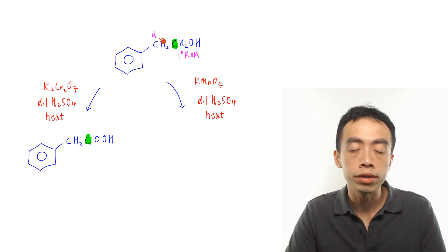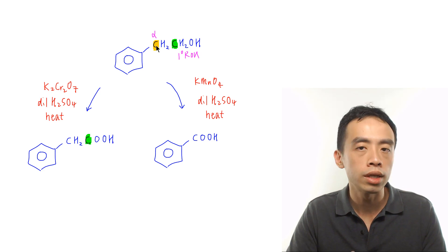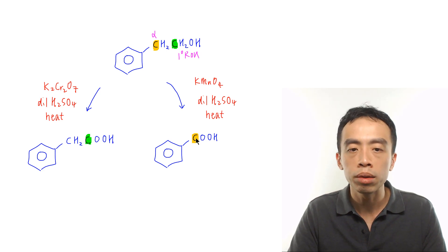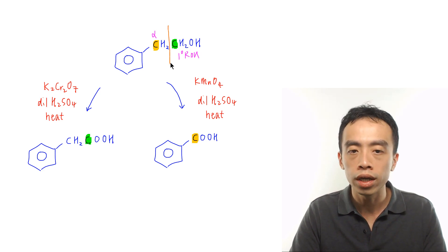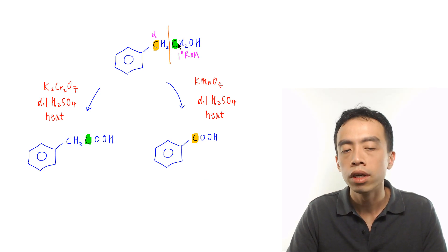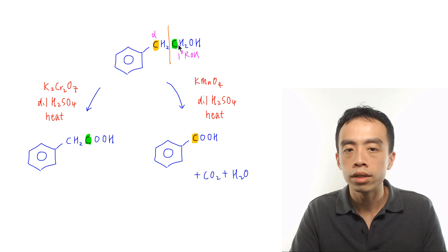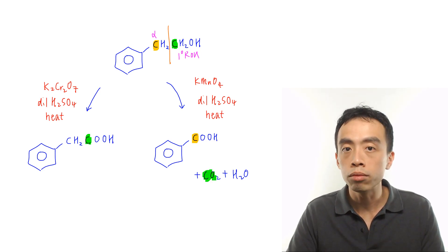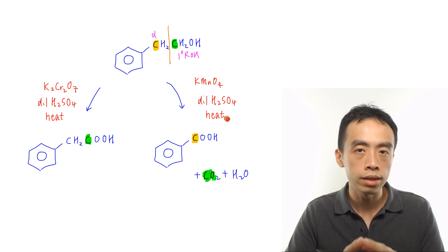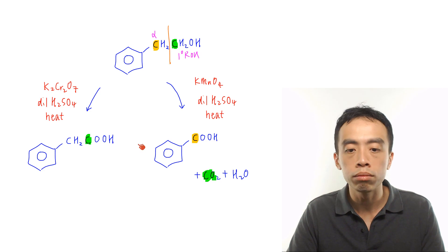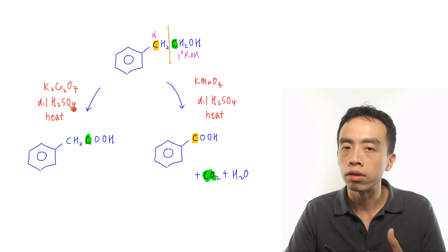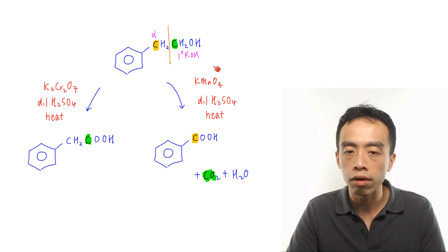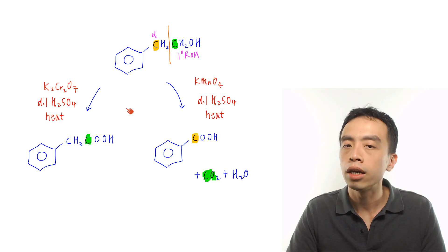If we use KMnO4 instead, it is strong enough to oxidize the alpha carbon to benzoic acid. The carbon-carbon bond breaks, leaving one carbon by itself, which is oxidized to CO2 and water. So the same compound, oxidized with different oxidizing agents, can give different products. We must be very clear about which functional groups are oxidized by KMnO4 versus K2Cr2O7.